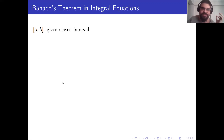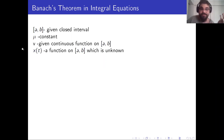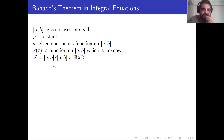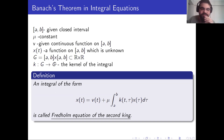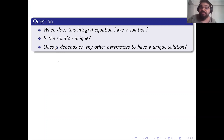Let's see how we can use this theorem in integral equations. Let a, b be a closed interval, μ a constant, v a continuous function on [a,b], x(t) the unknown function we want to find, g a region in R², and k the kernel of the integral. An integral of this form is called a Fredholm equation of the second kind. We may ask: when does this integral equation have a solution? If it exists, is the solution unique?